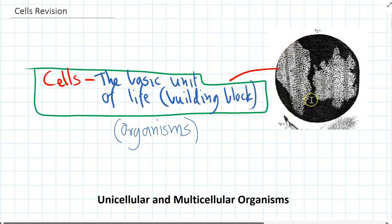Here's a picture of the first cells that people saw under the microscope. That was Robert Hooke, who invented that original microscope back over 200 years ago.